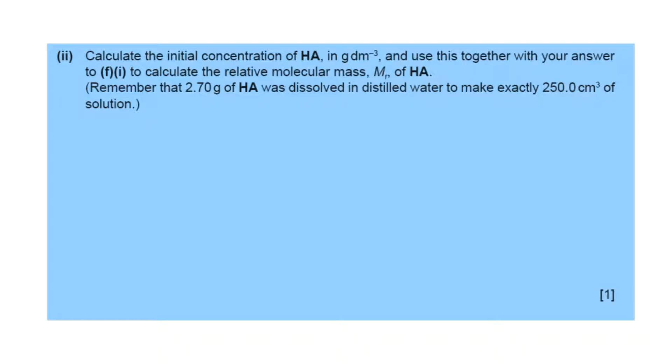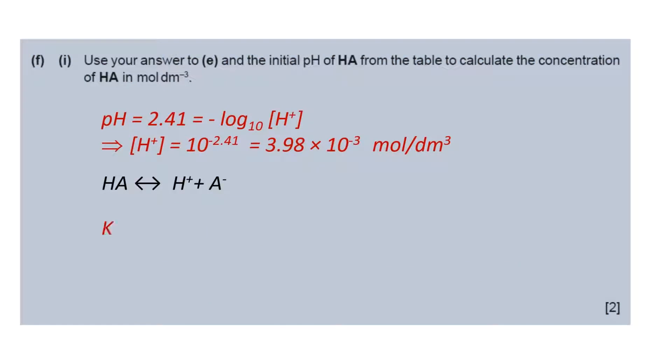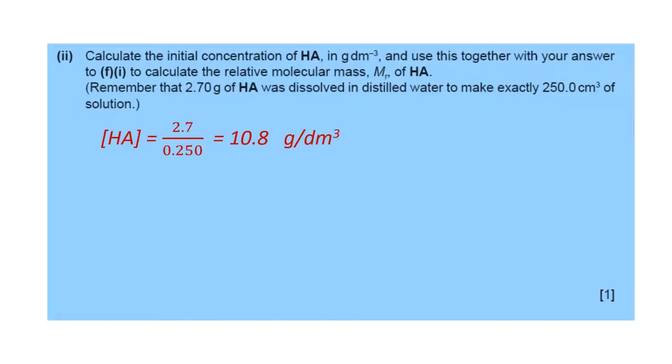Now question 2. From here, we have to find out the initial concentration of HA in grams per dm³ and then the relative molecular mass. The mass is given as 2.70 grams and the volume is 250 cm³. From here, 2.7 divided by 0.25 dm³ gives us 10.8 g/dm³. This is the concentration. Another concentration we found in the previous question was 0.12 mol/dm³. From these two, we can get 10.8 divided by the relative molecular mass equals 0.12. That is, grams per dm³ divided by Mr equals mol/dm³. So we get Mr is 90.